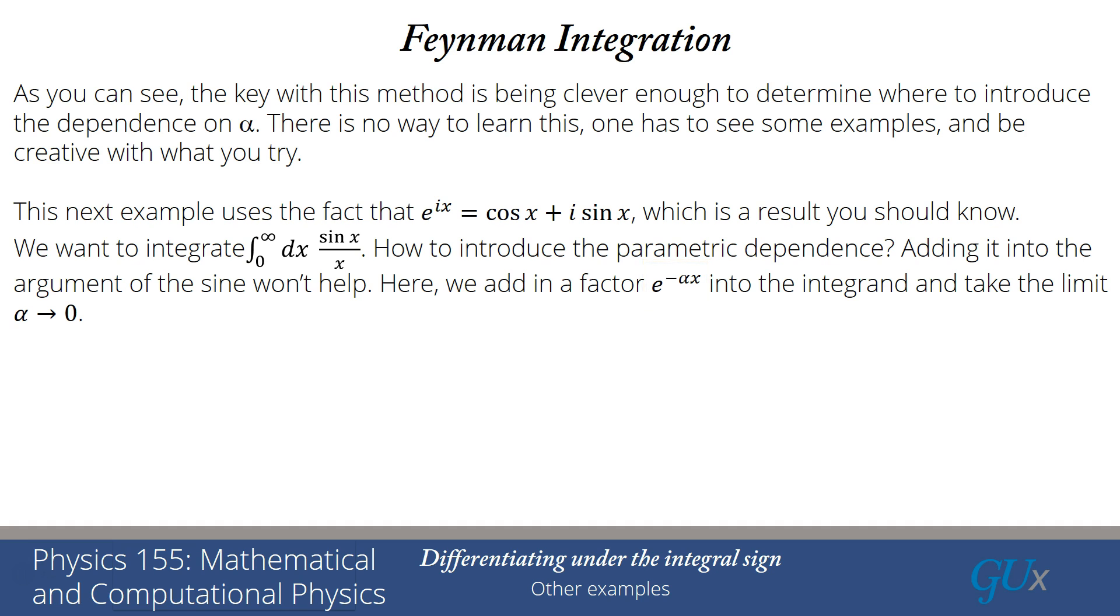The idea is that we now add a factor of e to the minus alpha x into the integrand. If I do that, then I will cancel the power of x in the denominator, but I'll still have a nice convergent integral as long as alpha is positive. And then at the end, we take the limit alpha goes to 0 in order to get the original integral that we're interested in. So we define a set of parametric integrals, i of alpha, integral 0 to infinity dx sine x over x e to the minus alpha x.